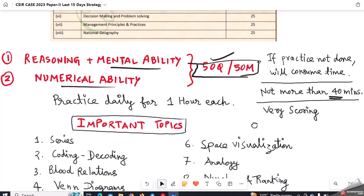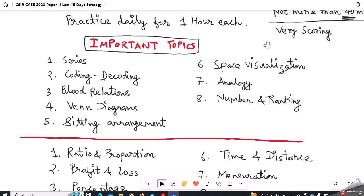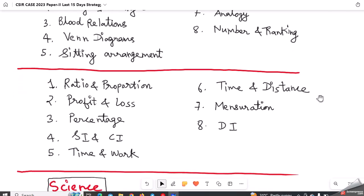What are the important topics? If you go through the previous question paper or the sample question paper, these are the important topics which you should cover: series, encoding and decoding, blood relations, Venn diagram, seating arrangement - very simple questions will be asked - space visualization, analogy based questions, number and ranking. These are important topics in reasoning.